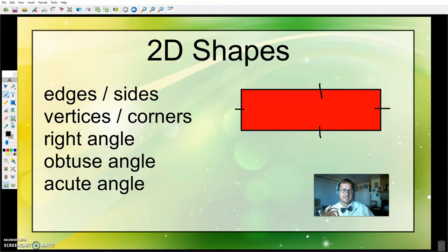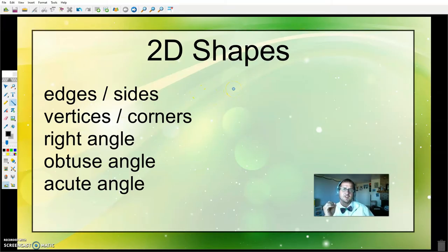I've drawn a shape here for us to look at to start to learn some of these. The edges or sides are exactly as it sounds. I have marked the four edges of this rectangle. Vertices, which is more than one vertex would be the singular, are the corners of it. Here, here, here, and here. This shape that I have drawn has four edges and four vertices.